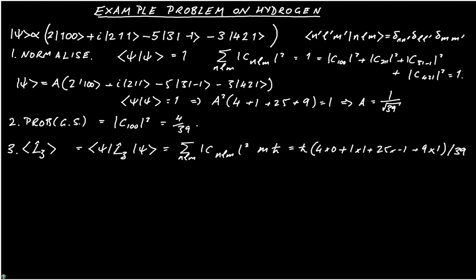So in each case, we've taken the square modulus of the coefficient: 4, 1, 25, and 9. And we've multiplied by the eigenvalue of L_z, which for |100⟩ is 0, for |211⟩ is 1, for |31-1⟩ is minus 1, and for |421⟩ is 1. And when we add that all up, we find minus 15 over 39 ℏ.